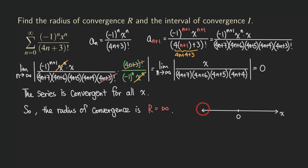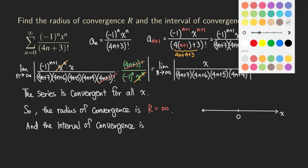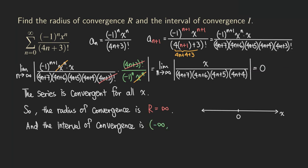Since we are taking all x values, the interval of convergence is negative infinity to positive infinity — you can take the whole number line. There are no endpoints that we need to test for this problem, unlike other examples. This is a nice series because we can put in any x value and the series will still converge.